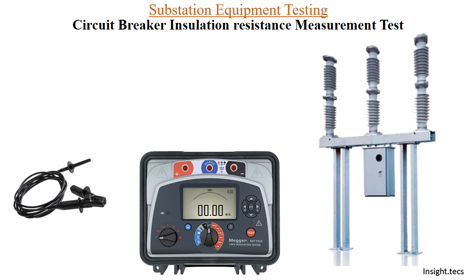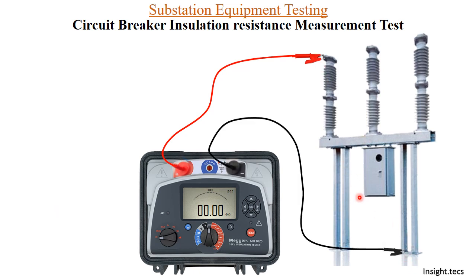We will connect the positive terminal to the top part of the circuit breaker and the negative terminal to the bottom part, which is earth. This will give us the IR value between top to earth for this circuit breaker. We will set the voltage to 5 kV and press the test button, conducting this test for 1 minute. After 1 minute, we have got 80.50 giga ohms, that is 80,500 mega ohms. Now let us do our next test.